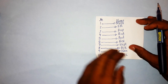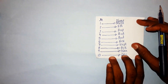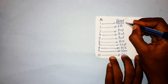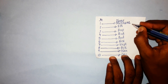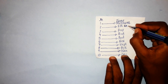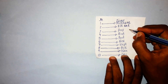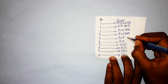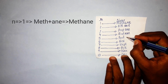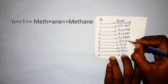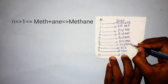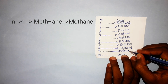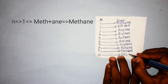To name an alkane with one carbon atom, the prefix is 'meth-' and you add the suffix '-ane', giving methane. Then ethane, propane (three carbon atoms), butane, pentane (five carbon atoms), hexane, heptane, octane, nonane, and finally decane. These are the first ten members of the alkane series.